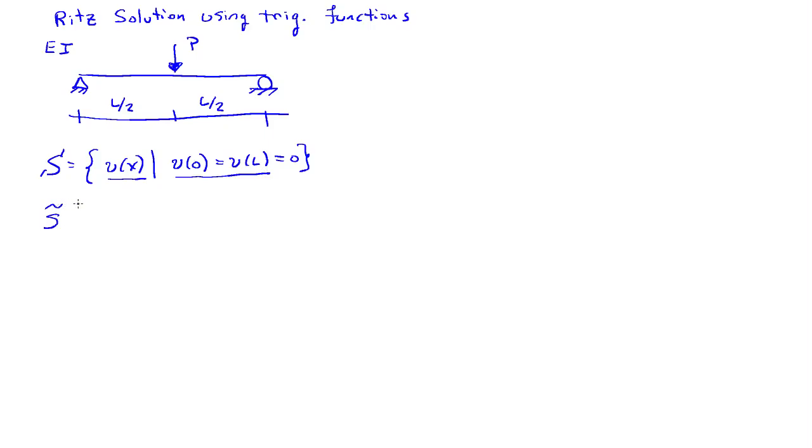And as a subspace s tilde, I'm going to consider functions v of x that have the special form of being a trigonometric series. So v of x is going to be composed of a linear combination, n equals 1 to capital N, of coefficients cn times sine n pi x divided by l. So that's going to be my subspace there.